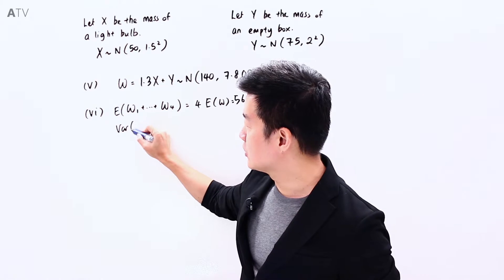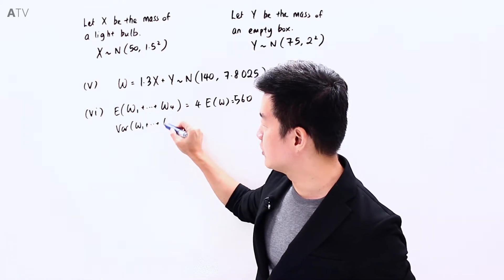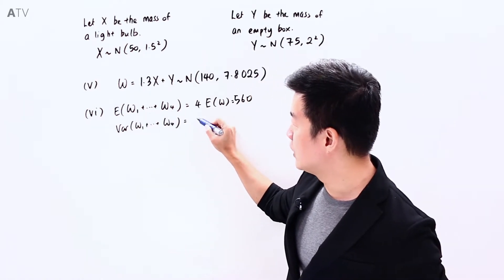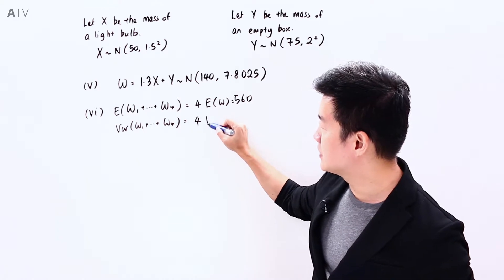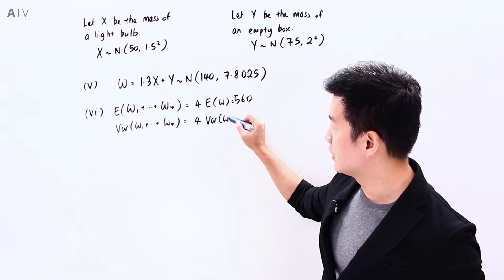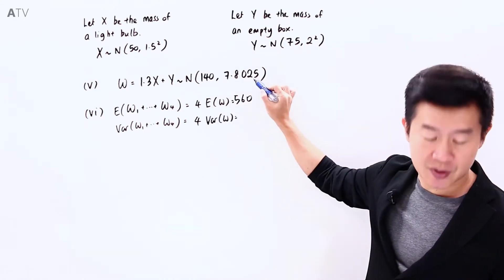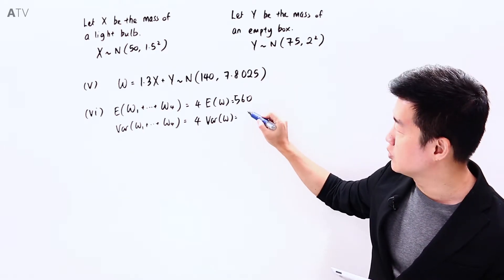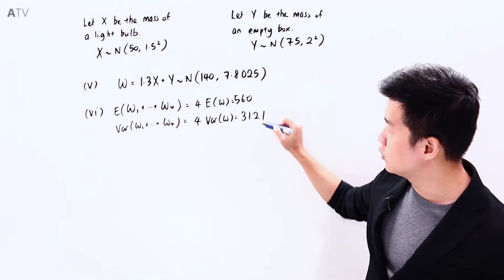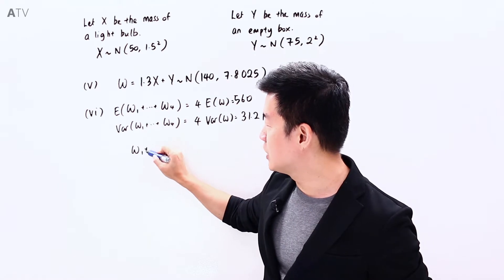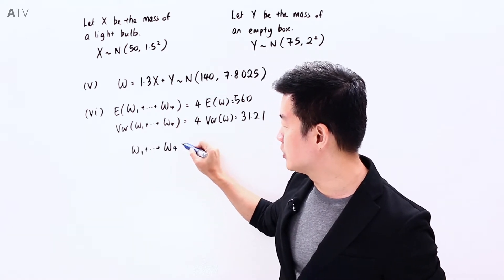We will look at the variance. So the variance of W1 plus W2 all the way until W4, and this is going to be 4 times the variance of W. So it will be 4 times of this, and that is going to be equal to 31.21, which means that W1 plus W2 all the way until W4